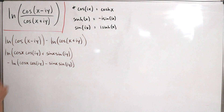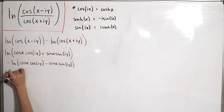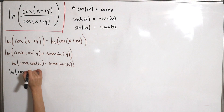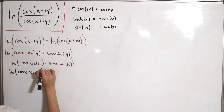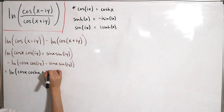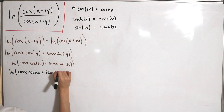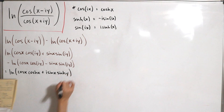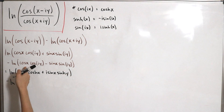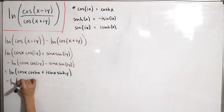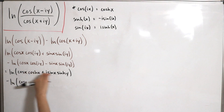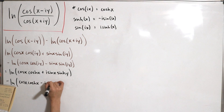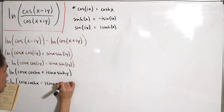Performing the substitutions: the first natural log argument becomes cos(x)·cosh(y) plus i·sin(x)·sinh(y). The second natural log argument becomes cos(x)·cosh(y) minus i·sin(x)·sinh(y).